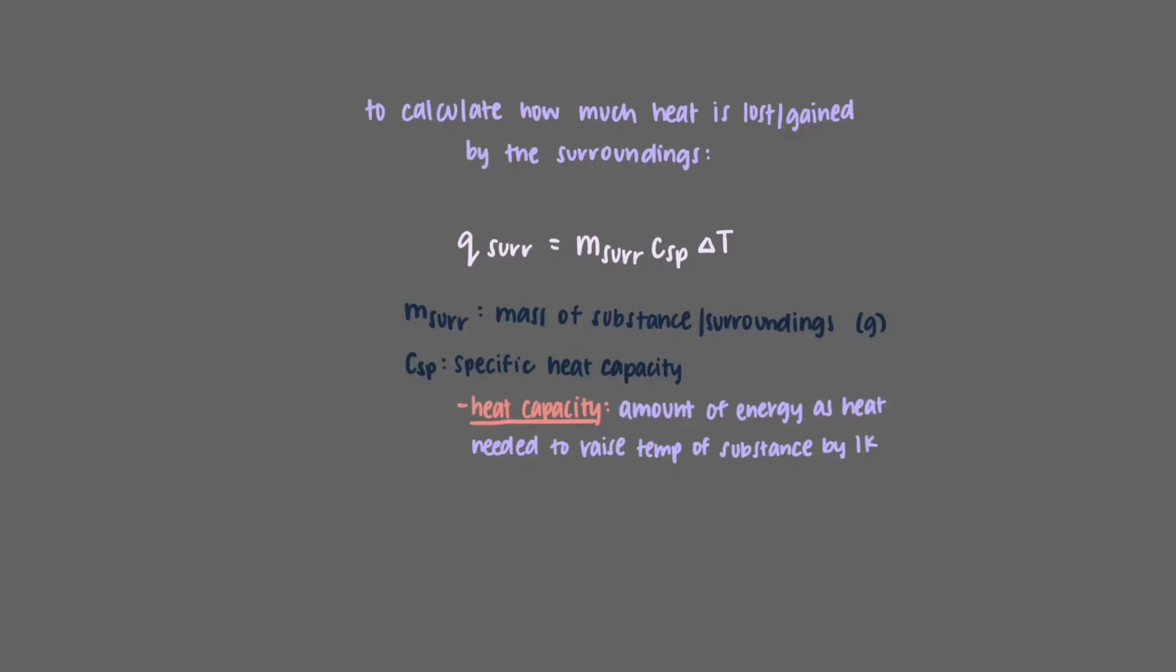Heat capacity is the amount of energy as heat needed to raise the temperature of the substance by 1 Kelvin. Specific heat is the amount of energy needed to raise the temperature of 1 gram of a substance by 1 Kelvin.